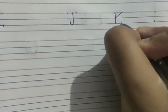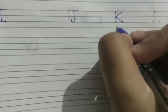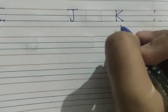Now K, how to make K? Make a standing line, slanting line, one more slanting line. K. K are kite, K are king, K are key.